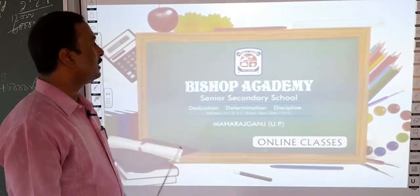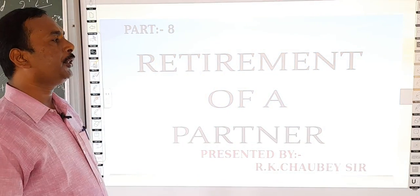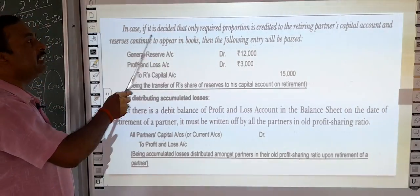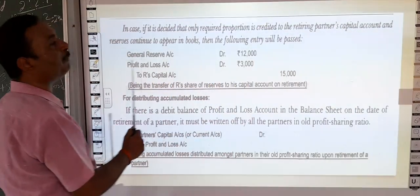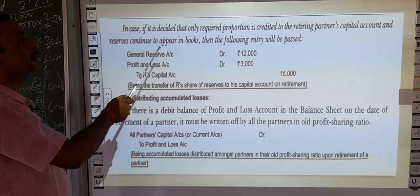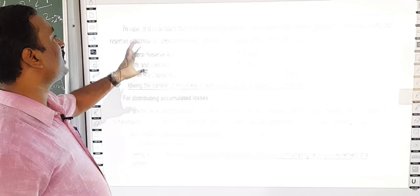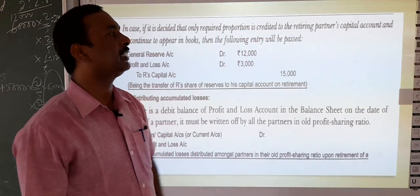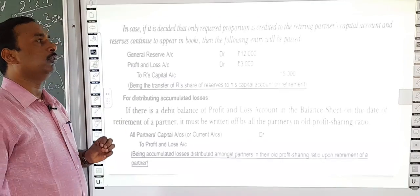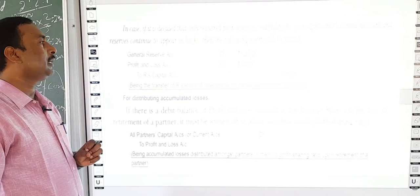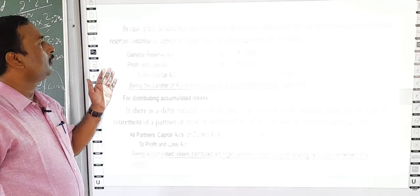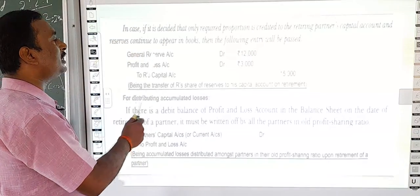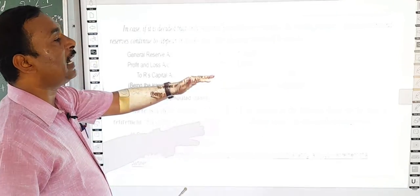Hello students, welcome to Bishop Academy online classes. In this part of the video I am going to discuss the remand and remain adjustment. In case it is decided that only the required proportion is credited to the retiring partner's capital account and reserves continue to appear in the books, then the following entry will be passed. In that case, General Reserve Account debit, Profit and Loss Account debit, to the retiring partner's capital account.